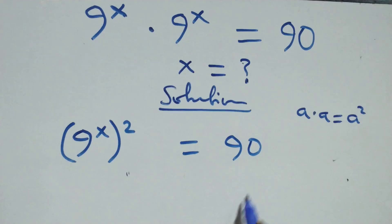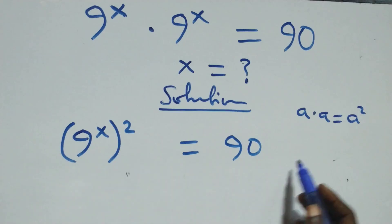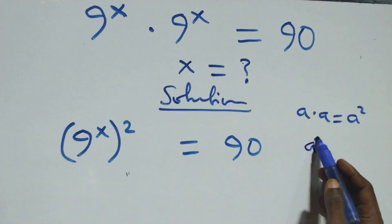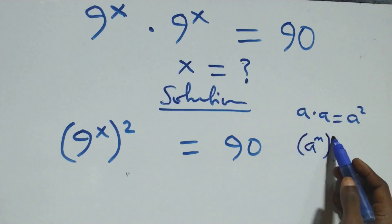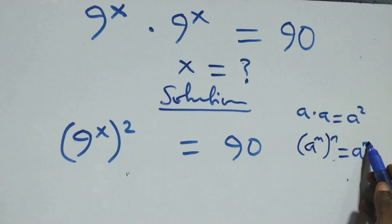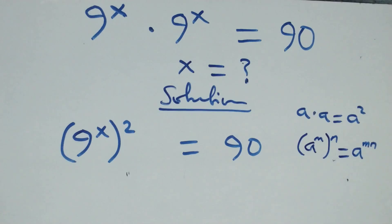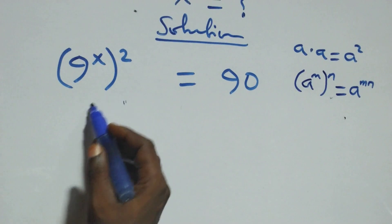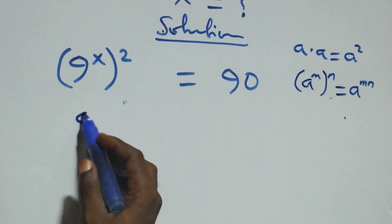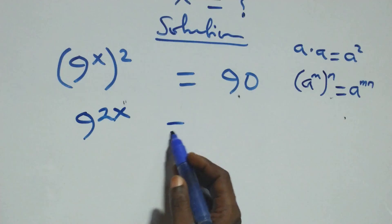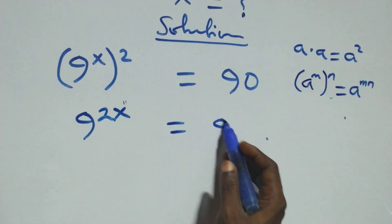This also follows from the law of indices. When we have a raised to power m, raised to power n, this is the same thing as a raised to power m·n. At this, the powers multiply, and we have 9 raised to power 2x equals to 90 from here.